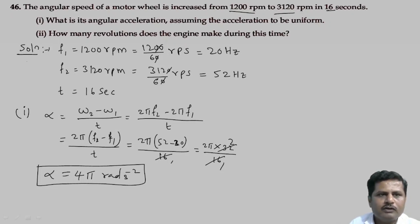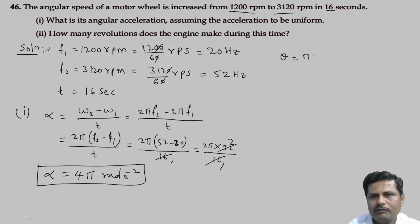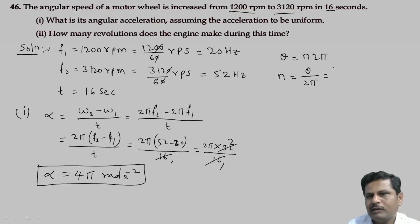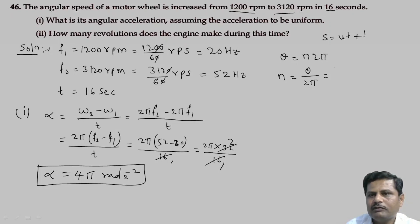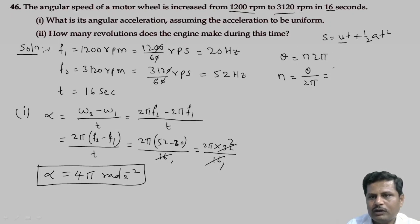For the second part — how many revolutions does the engine make — we know that theta equals number of revolutions into 2 pi, so number of revolutions n equals theta divided by 2 pi. We need to find theta, the angular displacement. Using the equation analogous to s equals ut plus half at squared, theta equals omega initial into t plus half alpha t squared, then divided by 2 pi.